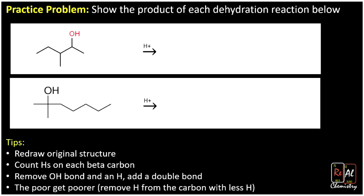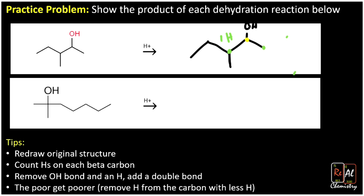Next we have an OH on a substituted alcohol with a methyl group. Redrawing the structure, our alpha carbon is on the OH and we identify beta carbons on each side. The left beta carbon has one two three bonds, so it has just one hydrogen, while the one on the end has three hydrogens. The poor get poorer, so we take the hydrogen from the side with one hydrogen, remove the OH, and form the double bond on the interior.